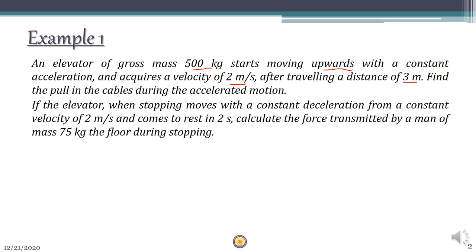The same elevator then continues and for stopping, it decelerates from an initial velocity of 2 m/s and comes to rest in time T equal to 2 seconds. Final velocity V is zero because it comes to rest. The deceleration is not given and has to be found using Newton's law of motion, V = U + aT.